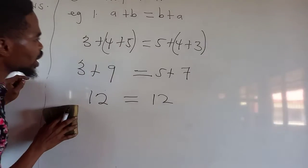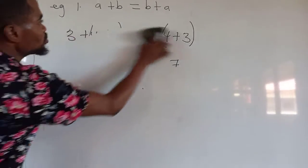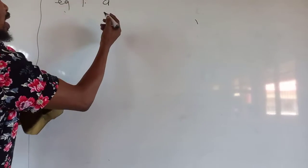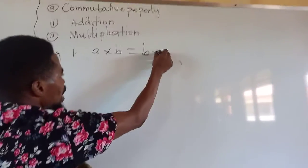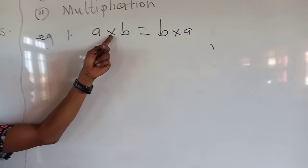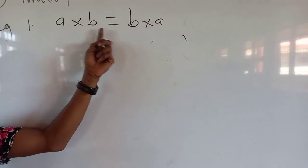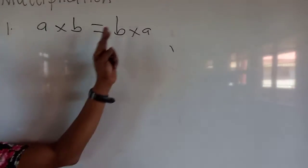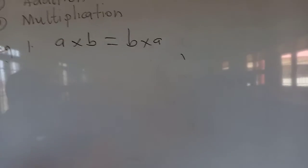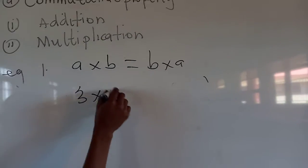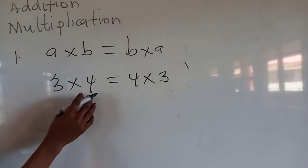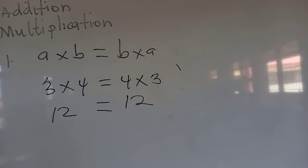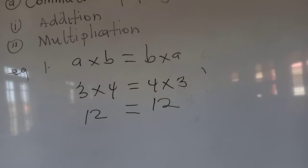Now let's move on to multiplication. The commutative rule for multiplication tells us that a times b equals b times a. Changing the variables or shifting them from one location to another does not change the product. For example, three times four equals four times three. Three times four gives us twelve, and four times three still gives us twelve. Which means that multiplication is commutative.